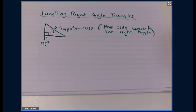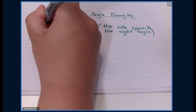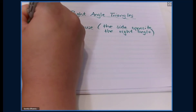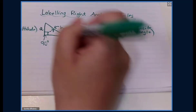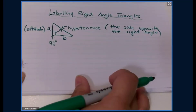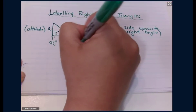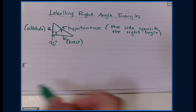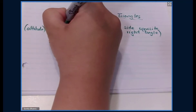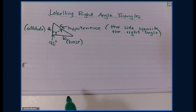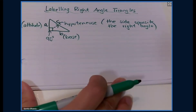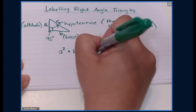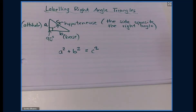The other two sides: we label A for altitude, and this side here would be labeled B for base. The hypotenuse is labeled as C. And when we get to the Pythagorean theorem — which you've probably learned before — you will see that A squared plus B squared equals C squared.